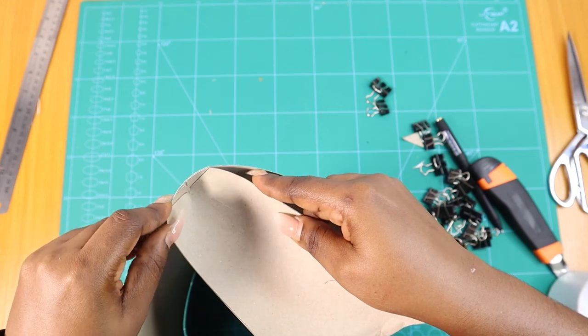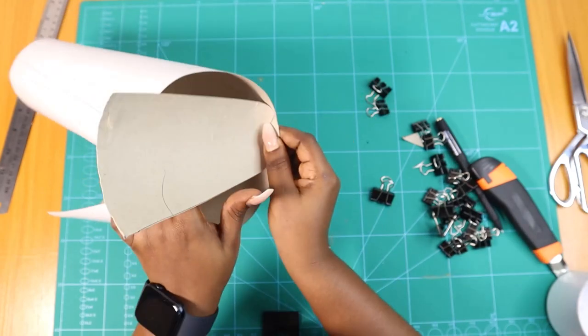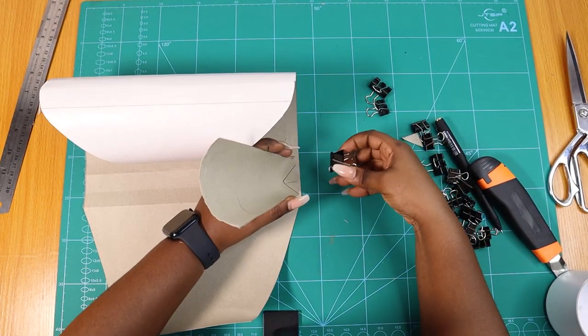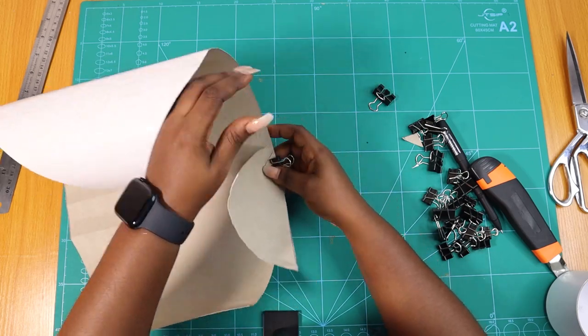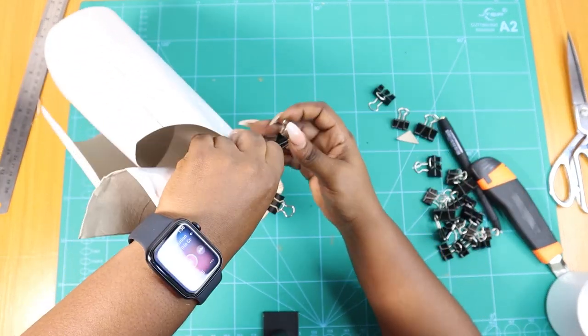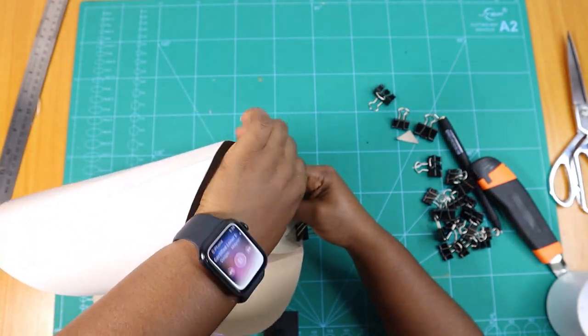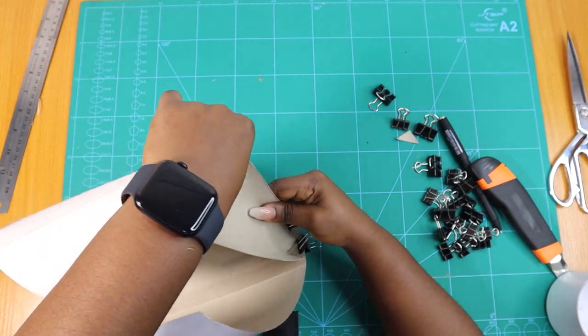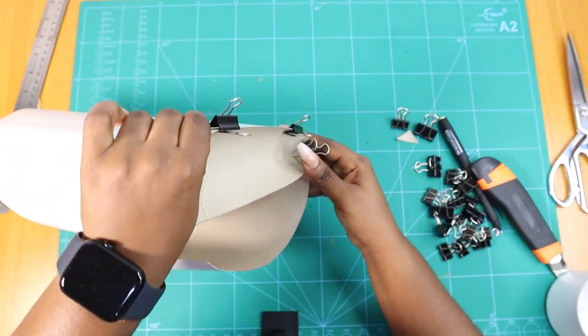We're just going to check our pattern for the last time and see if it actually fits. I'm just going to clip it here. I'm using binder clips. You can use any type of clips you have, as long as it can hold your pieces together, it's fine. Let's check this one more time and see if it actually fits.